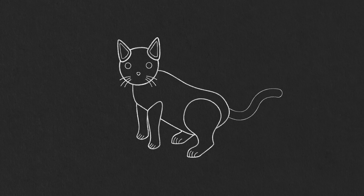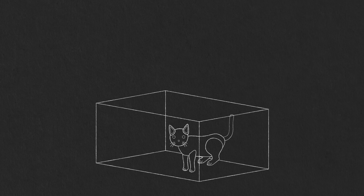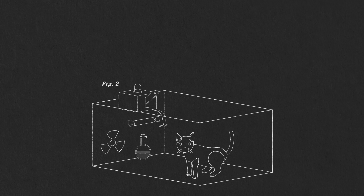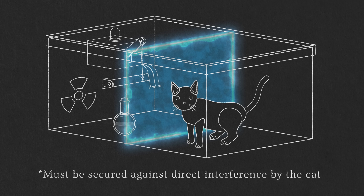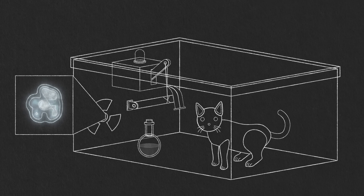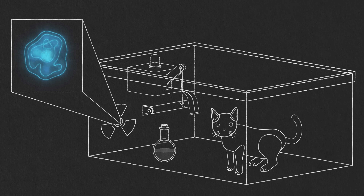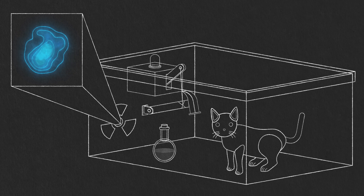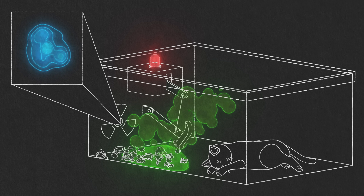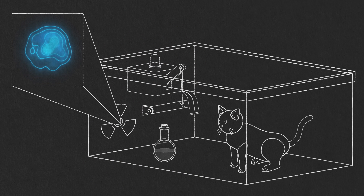Schrödinger himself hated this formulation, which is actually why he invented the famous Schrödinger's cat thought experiment. Put a cat in a box with a radioactive atom. Add a radiation detector that triggers the release of poisonous cyanide gas. Schrödinger helpfully notes this device must be secured against direct interference by the cat. The whole point is to magnify the state of the atom up to the state of something macroscopic and tangible. If the atom decays, the detector detects radiation, releases the poison, and the cat dies. If the atom doesn't decay, the detector doesn't detect radiation, poison is not released, and the cat remains alive.